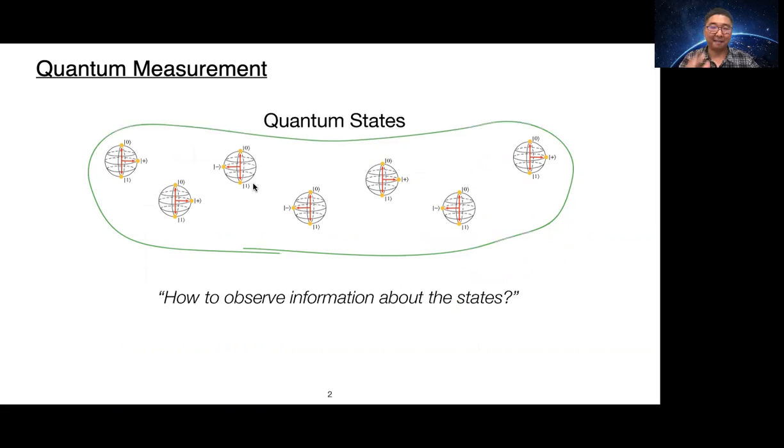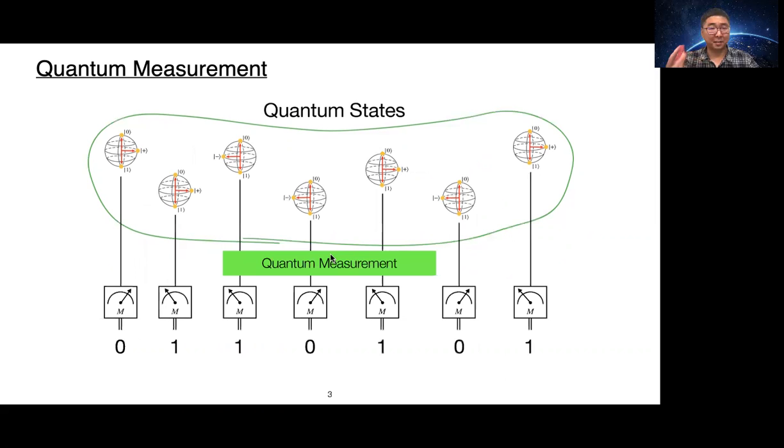Then we might have the following question: How do we observe information about the state? The answer is quantum measurement.